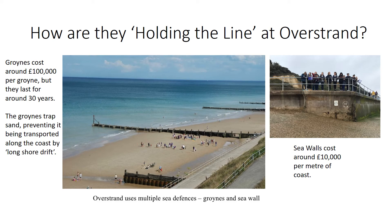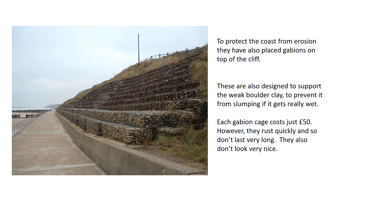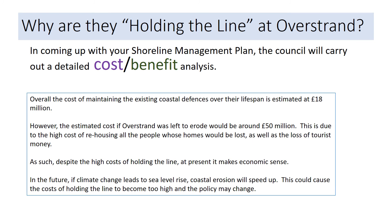There is also a large curved sea wall, which costs around ten thousand pounds per meter of coast protected and requires regular maintenance, particularly after storms. On top of the sea wall, rock cages called gabions are placed. These are designed to support the boulder clay cliff and prevent it from slumping when it gets very wet. Each cage costs just 50 pounds, making them relatively cheap, but they rust quickly, don't look very nice, and don't last very long.